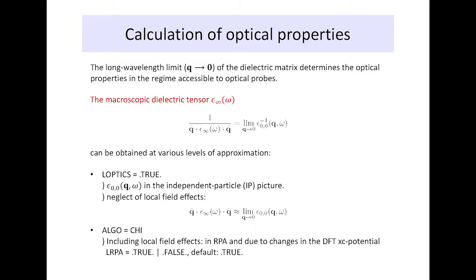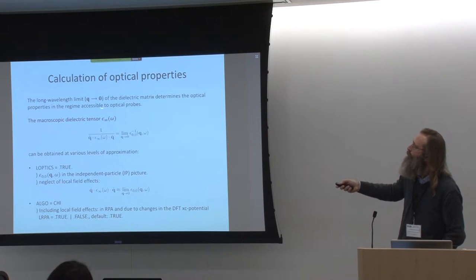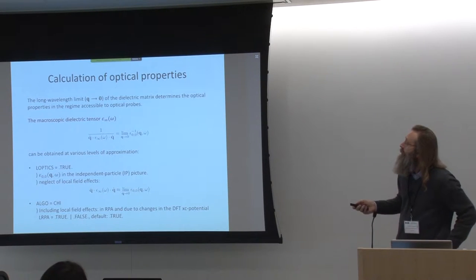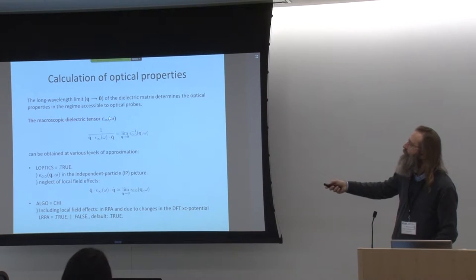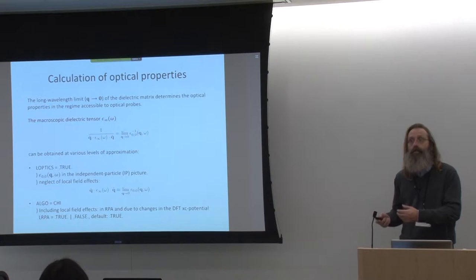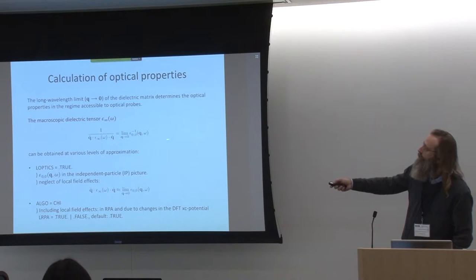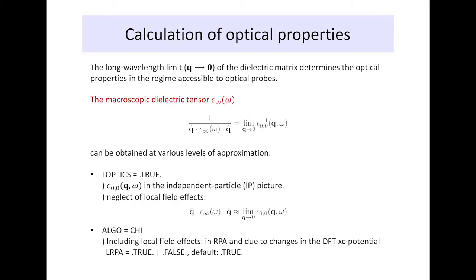In the long wavelength limit, for Q going to zero of the dielectric matrix, we connect to experiment. The dielectric matrix gives us access to optical properties in regimes probed by optical measurements. The macroscopic dielectric tensor ε∞(ω) is given by a particular relationship, and this quantity we can now calculate — for instance, in the random phase approximation. From our Kohn-Sham polarizability, we can calculate this inverse dielectric matrix in the RPA and get access to ε∞.